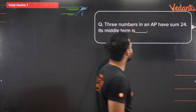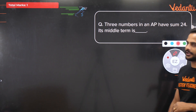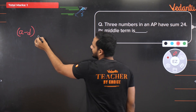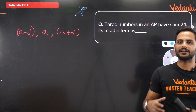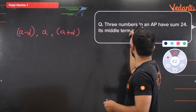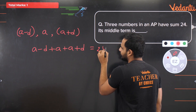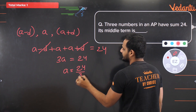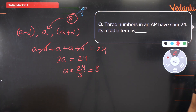Question 3: Three numbers in an AP have sum 24. What is the middle term? Whenever three-term questions come, let the terms be a−d, a, a+d. Their sum: (a−d) + a + (a+d) = 3a = 24, so a = 8. The middle term is 8.